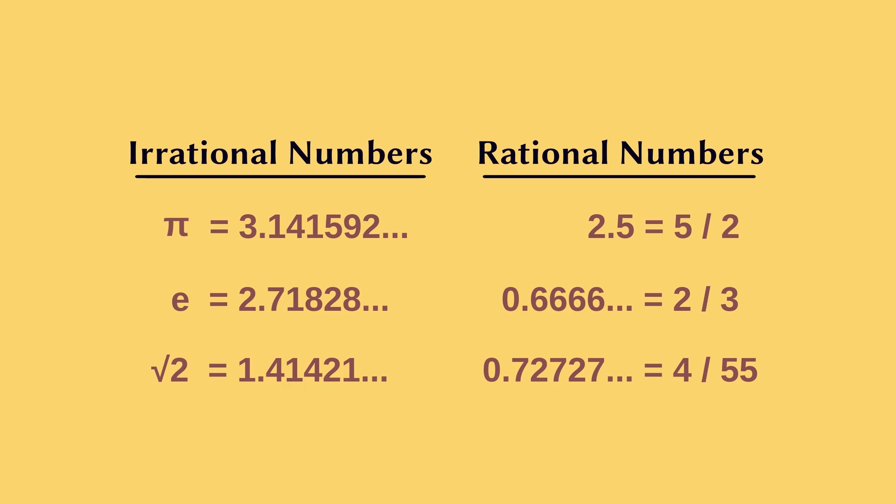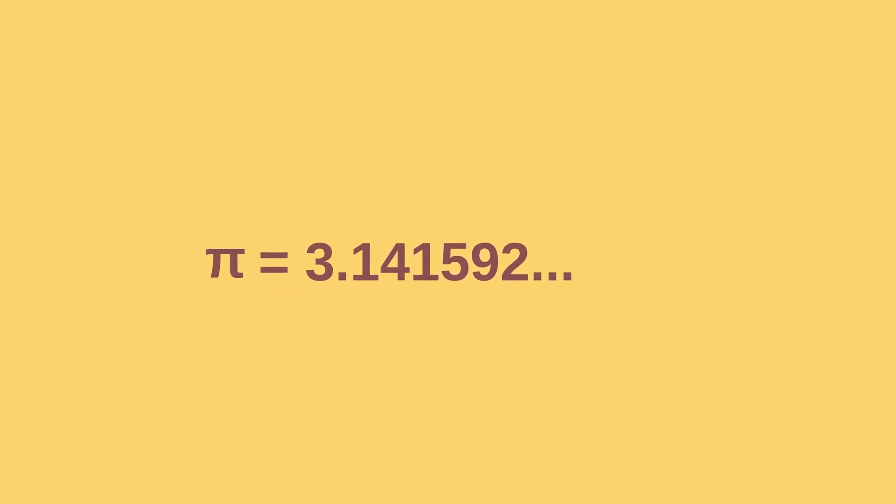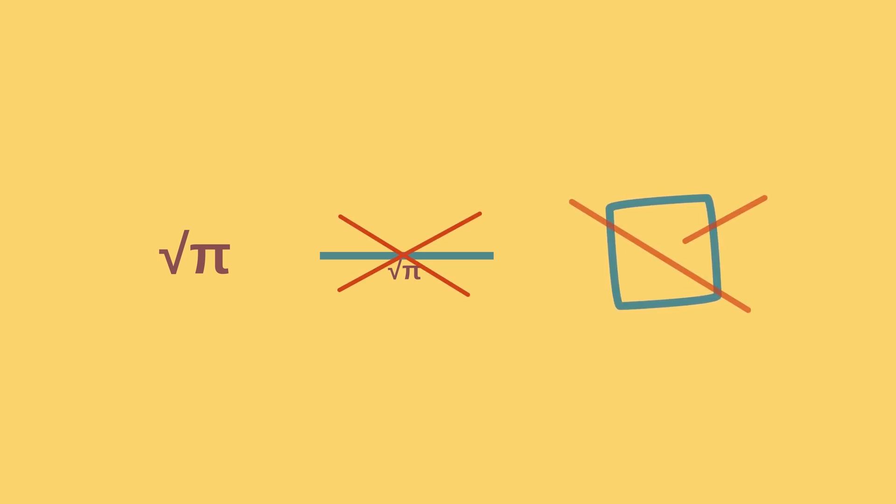This is the key to understanding why our problem is impossible to solve. As π is an irrational number, we can't ever find out the exact value of π. Its decimals go on forever. So we can't know √π, and this leads us to not being able to make a line of length √π, which proves that we can't square a circle accurately.